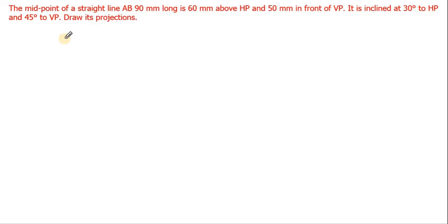The straight line is inclined 30 degrees to HP, so the HP inclination will be visible on the front view, and the VP inclination will be visible on the top view. That is quite simple. So draw its projections — listen carefully, this is a very important diagram.